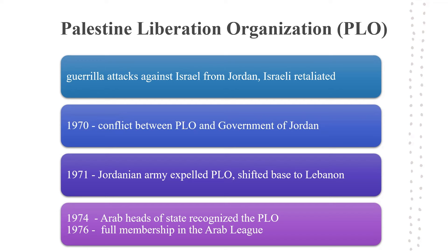PLO organised and launched guerrilla attacks against Israel from its base in Jordan. Israel retaliated to these attacks. PLO's attacks on Israel led to conflict between PLO and the government of King Hussein of Jordan in 1970, due to which PLO was expelled from the country by the Jordanian army in 1971. PLO then shifted its base to Lebanon and continued its attacks on Israel. Arab heads of state recognised the PLO as the sole legitimate representative of all Palestinians in 1974. In 1976, PLO was admitted to full membership in the Arab League.